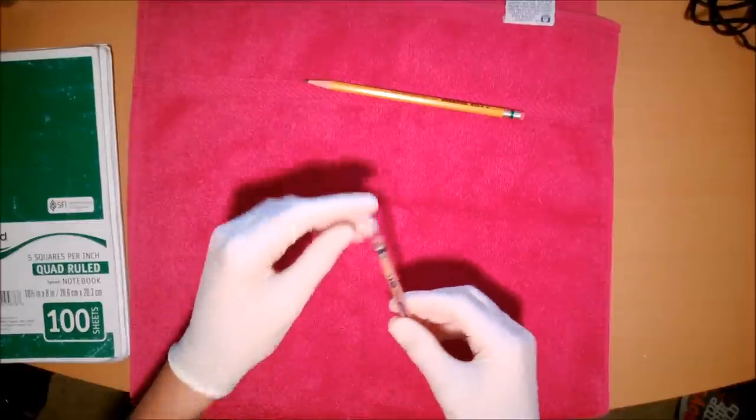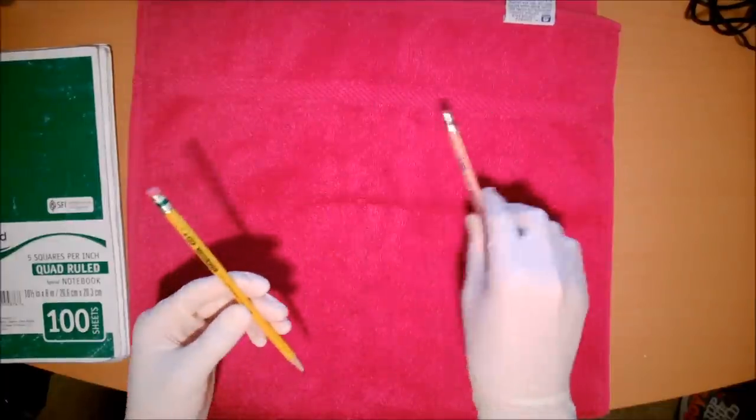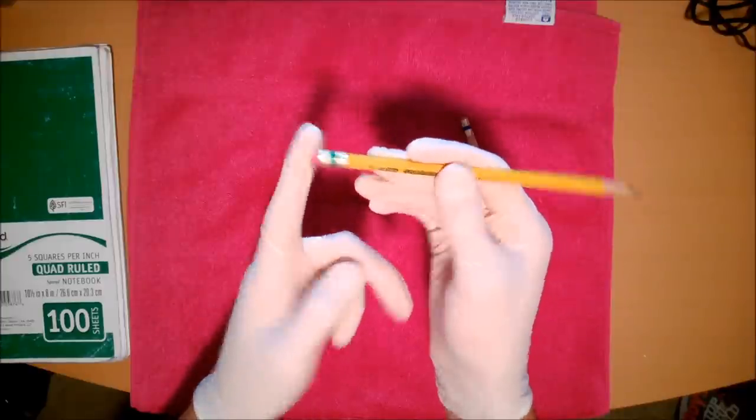So getting to the eraser, usually these USA golds come with short erasers. This one's been used a little bit. But this one right here, this is about how the eraser comes. It's very short compared to, let's say, Ticonderoga.